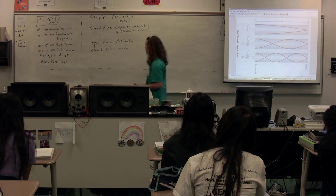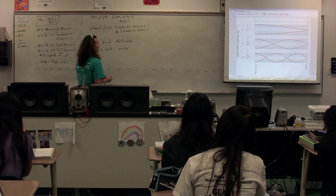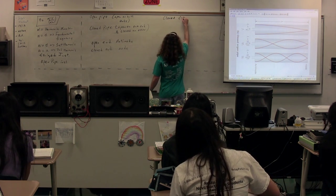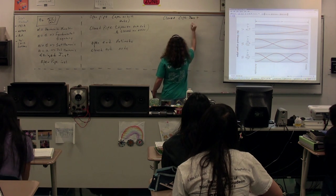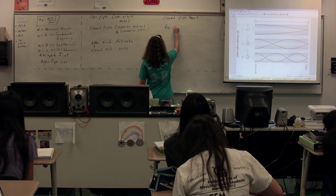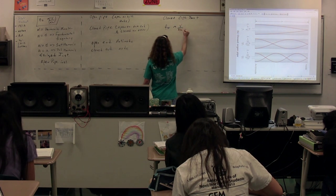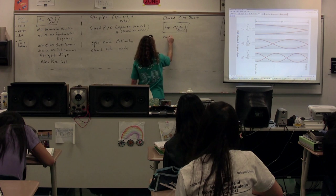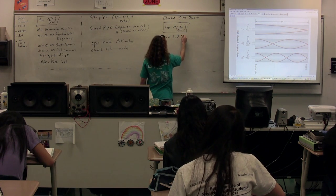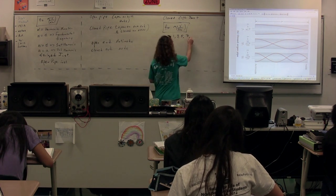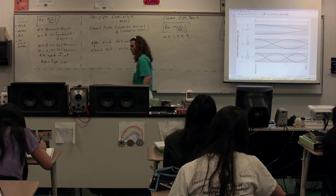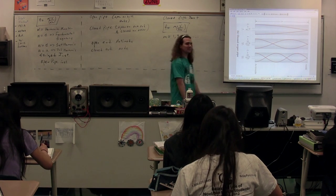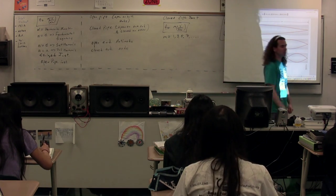So I'm not going to walk through the equations for that one, but for a closed pipe instrument, the equation works out like this. Frequency equals M times V over 4L, where again M is called the harmonic number. But you only have the odd integers, odd positive integers, for a closed pipe. Only the odd harmonics exist for a closed pipe instrument.